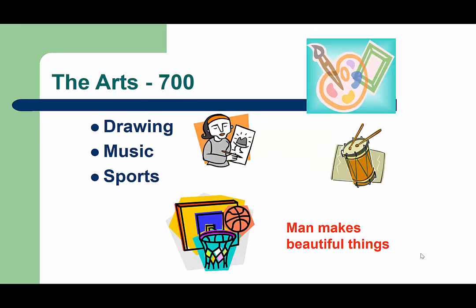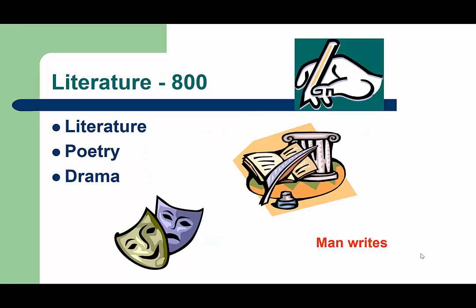The 700s is a super, super popular section. Besides the drawing books, there's also the sports books. A long time ago, libraries would put all of their fiction books in the literature, or 800s section. But now most librarians have so many fiction books that they put them in a separate section, like we do. But you're still going to find poetry and drama in the 800s.